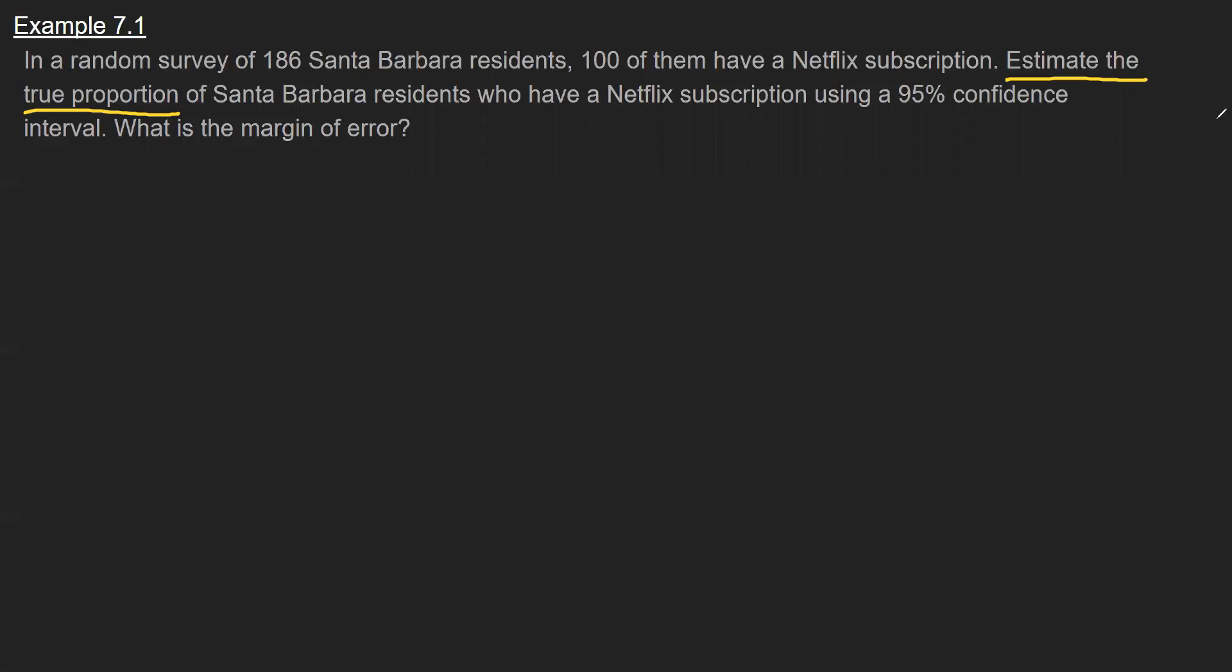And then what we're going to do is construct a 95% confidence interval. So if we recap the idea of confidence interval, we're looking at an estimate, and then since the estimate could be off due to sampling, due to just random variations, it's going to have a certain amount of error associated with it.